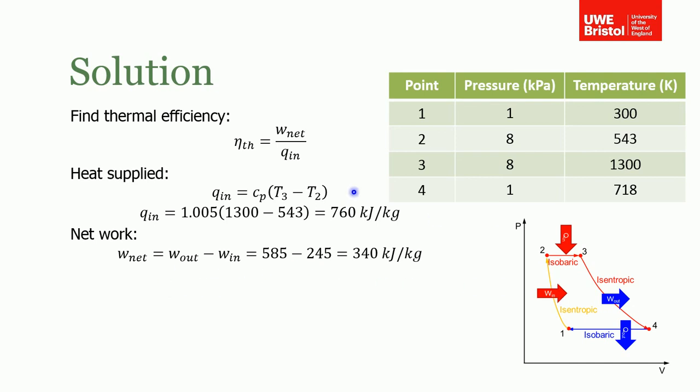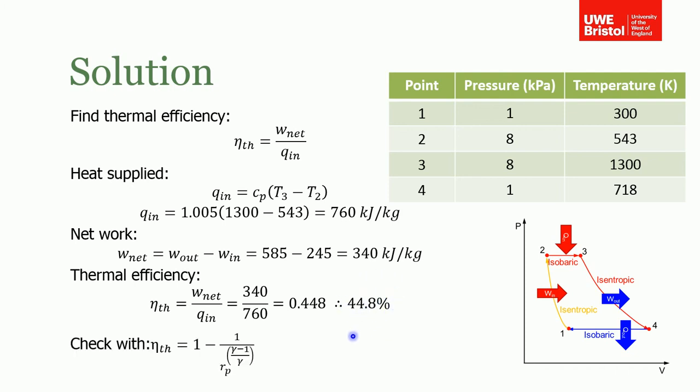From the previous slide, we know we can work out w_net because we already know what w_out and w_in are—we worked those out. By finding the difference of those, we get 340 kilojoules per kilogram. Then the efficiency is simply w_net divided by q_in, which gives us 45 percent approximately as a thermal efficiency. Remember, just as a check, you could always check that with that relationship that we derived during the lecture.